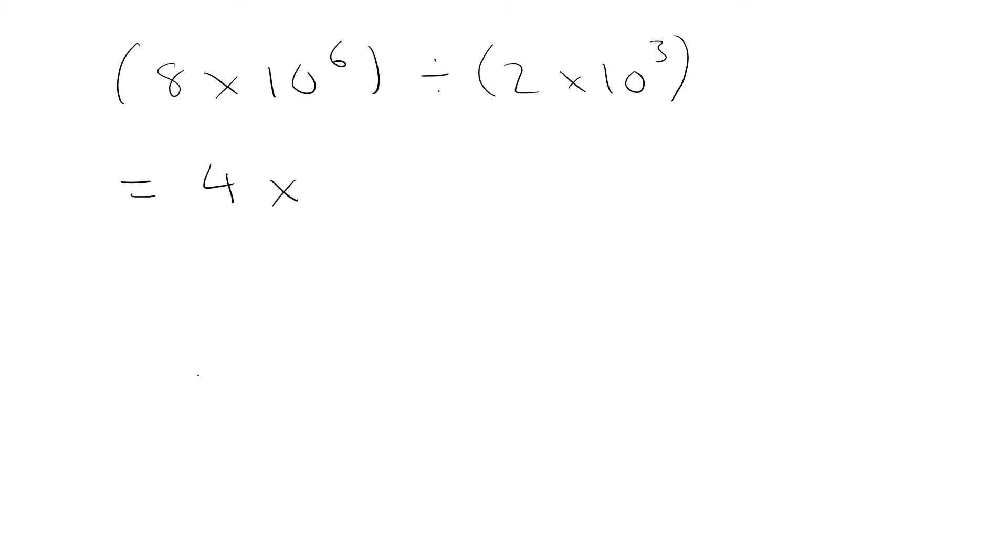And then you'll remember from our work on indices that 10 to the power 6 divided by 10 to the power 3 means we can subtract the power. So 6 take away 3, that's 10 to the power 3.